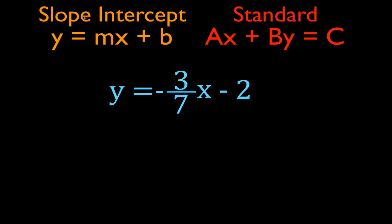You can see it's currently in the slope-intercept form, which is y equals mx plus b. We have y equals minus 3/7ths x minus 2 — minus 3/7ths is the slope (m stands for the slope), and minus 2 is our y-intercept (b is the y-intercept). The standard form is ax plus by equals c, and we want to convert from slope-intercept form to standard form.